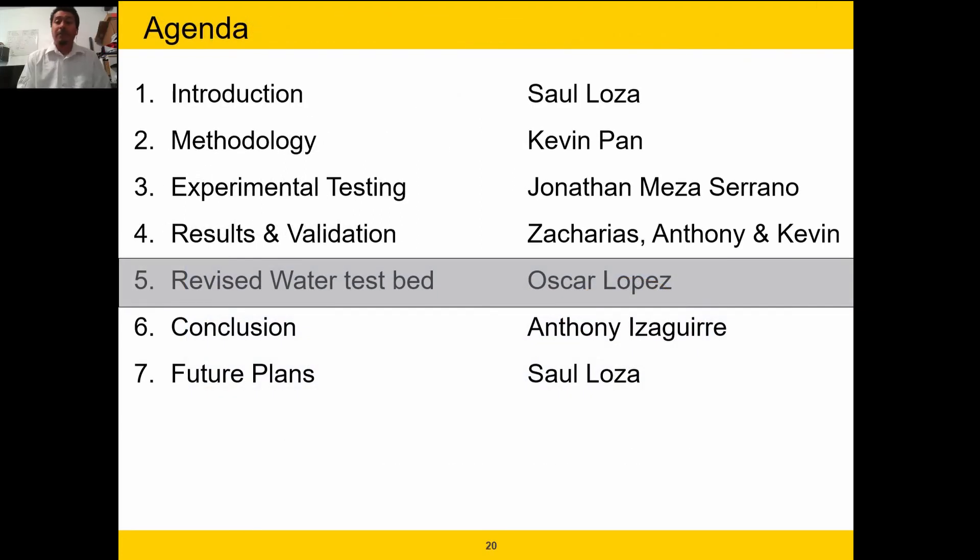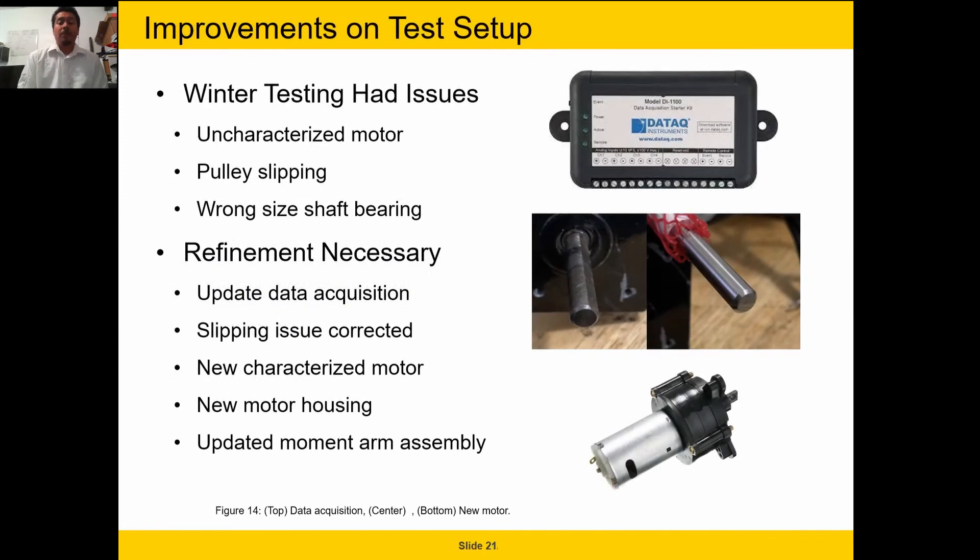Hello everyone, my name is Oscar Lopez and I will be going over the revisions to our water test bed. Right off the bat during our winter testing, we ran into a handful of issues. One of the issues we ran into was our uncharacterized motor. The motor that we had was donated so we weren't certain of its power output or its conditions, so this led to uncertainty we wished to address. The next issue we ran into was slipping of the pulley. While the pulley was simply attached by being press fitted onto the motor shaft, we learned from the winter testing this was not a secure attachment. What we noticed was that the pulley was slipping between the shaft and this would only deviate our data further. Another issue was the load bearing for our shaft. What we noticed when we disassembled was that the shaft for our motor had a D shaft opposed to a cylindrical shaft. While it fit inside the roller bearing, this was not a smooth one, and this would cause problems in also further skewing the data. So we knew refinement was necessary.